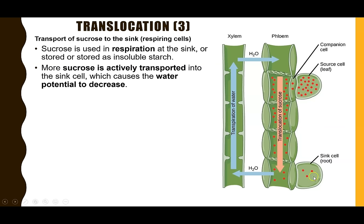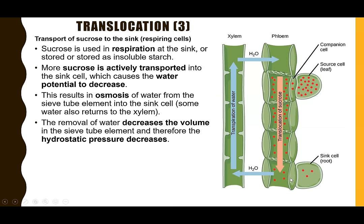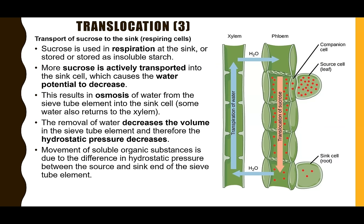The water that was in the sieve tube element will move by osmosis into the sink cell, and some will also move by osmosis back into the xylem. As sucrose leaves the phloem, that area now has a more positive water potential. The result is a lower volume at that section of the phloem and therefore lower hydrostatic pressure — and that's how we maintain high hydrostatic pressure near the source cell and lower hydrostatic pressure near the sink cell.